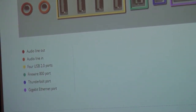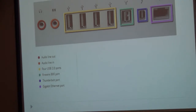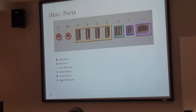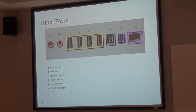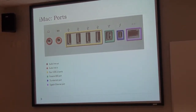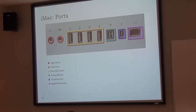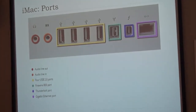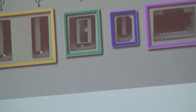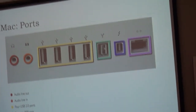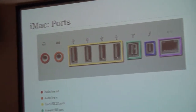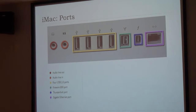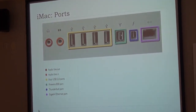In addition, we have the Thunderbolt port, which is in blue color. The Thunderbolt is a new feature of Macintosh that provides users 10 Gbps, so that means our PCI and the display port can provide 10 Gbps. It's much faster than the other classic ports we have.